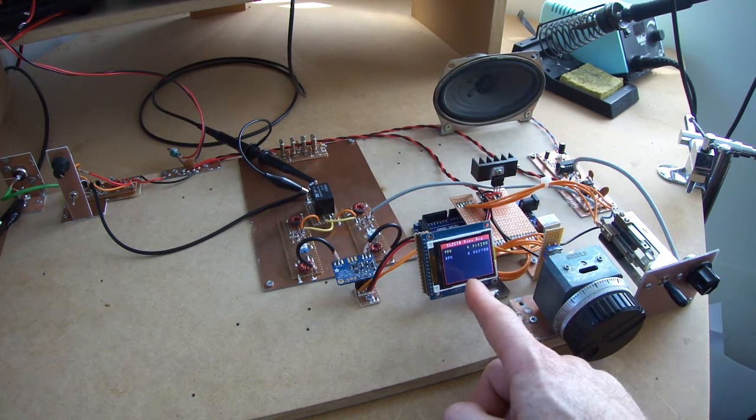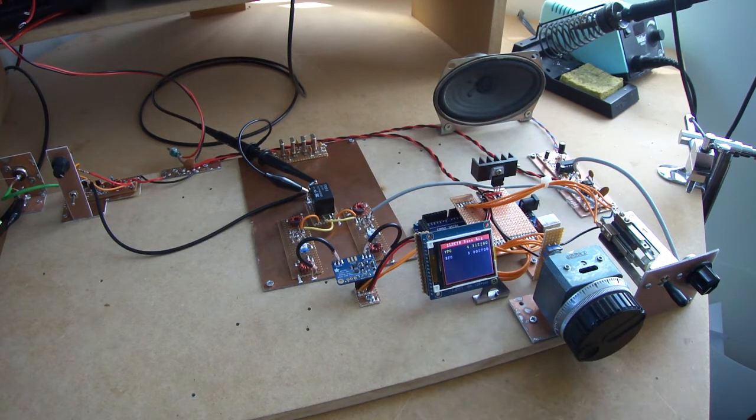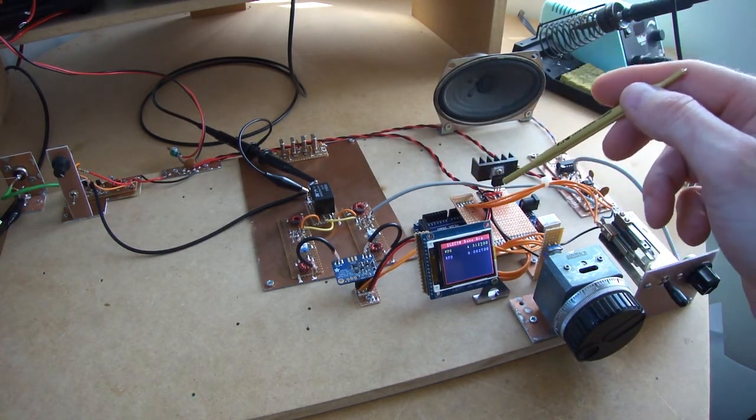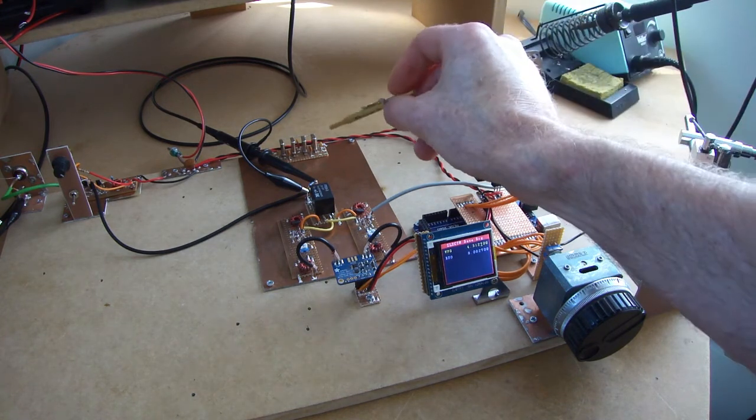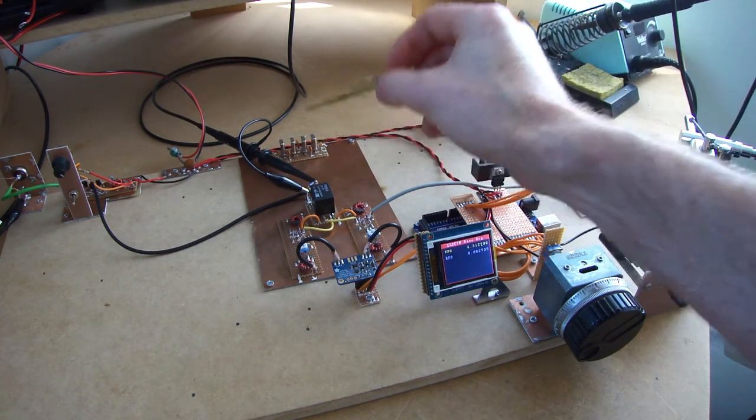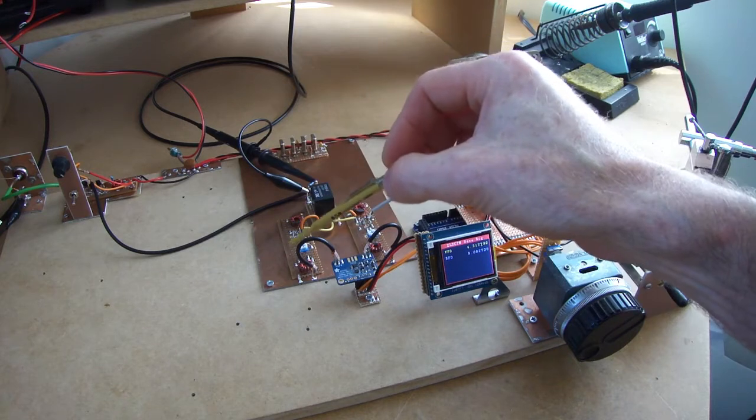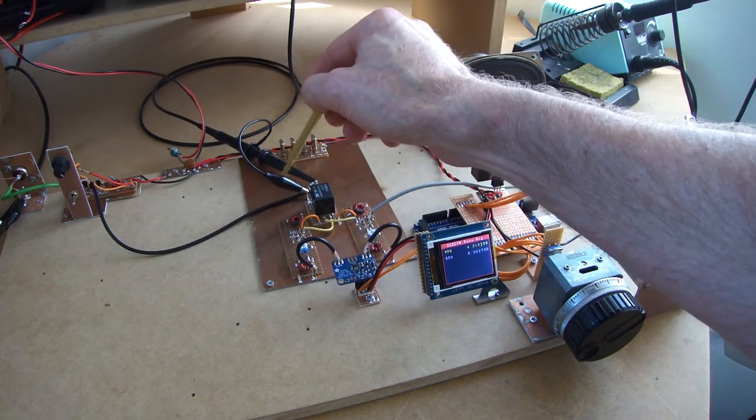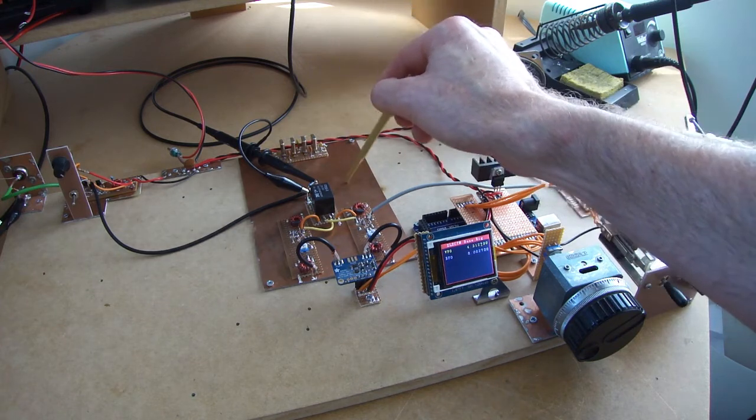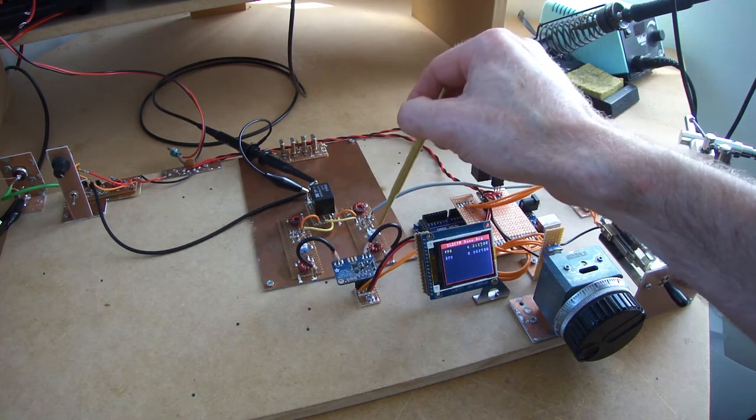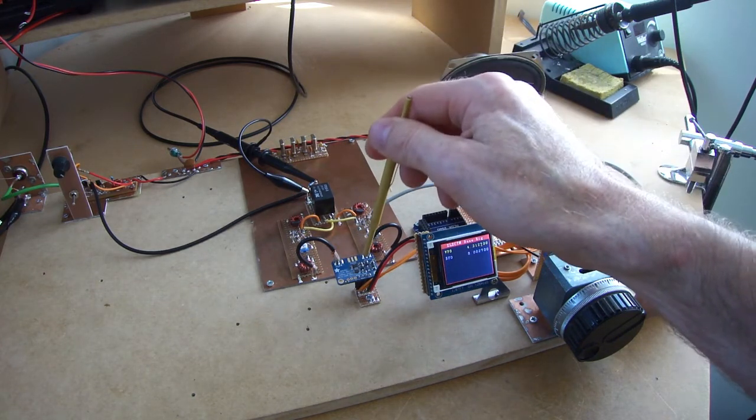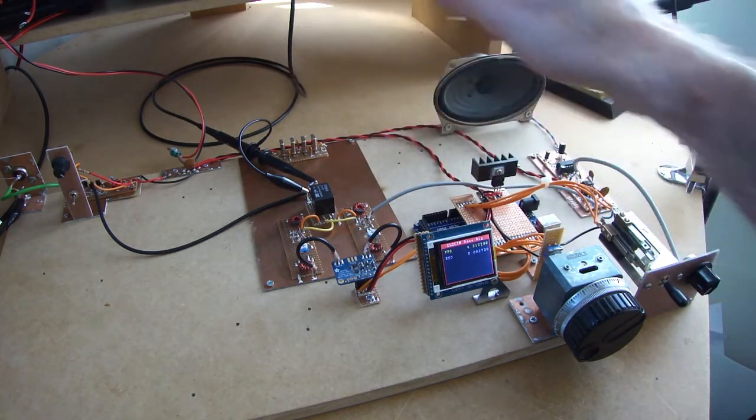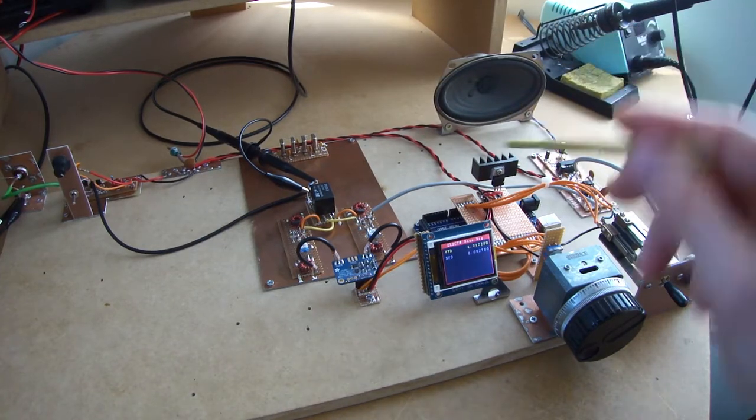The software at the moment is just test software. So once we convert this to a single conversion radio we will have the crystal filter in the circuit. So the RF will then come into the first mixer. It will be mixed down to the IF. There will be an IF amplifier in here. Through the crystal filter, through the second IF amp into the product detector. Mixed with the BFO from this side of the DDS. And then the audio will come out. But at the moment this is just configured as a direct conversion receiver.